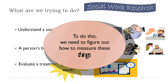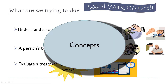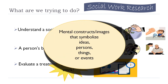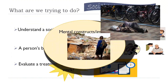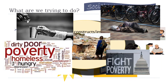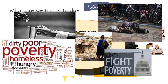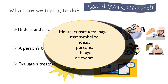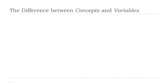To do this, we need to figure out a way to measure these things — like poverty, elder abuse, child abuse, etc. These are what we refer to as concepts. Concepts are mental constructs or images in your brain that symbolize ideas, persons, things, or events. So when I say poverty, a whole bunch of images probably come to your mind — ideas about what poverty means, maybe feelings about it. But we need to go from these concepts to variables.